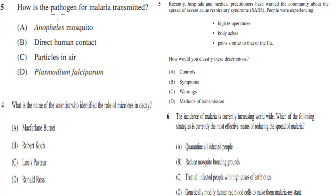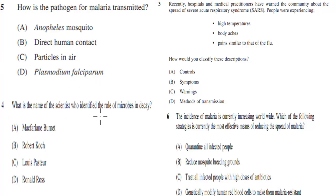How is the pathogen for malaria transmitted? A. Anopheles mosquito. B. Direct human contact. C. Particles in air. D. Plasmodium falciparum. The next question: what is the name of the scientist who identified the role of microbes in decay? A. McFarlane Burnett. B. Robert Koch. C. Louis Pasteur. D. Ronald Ross.